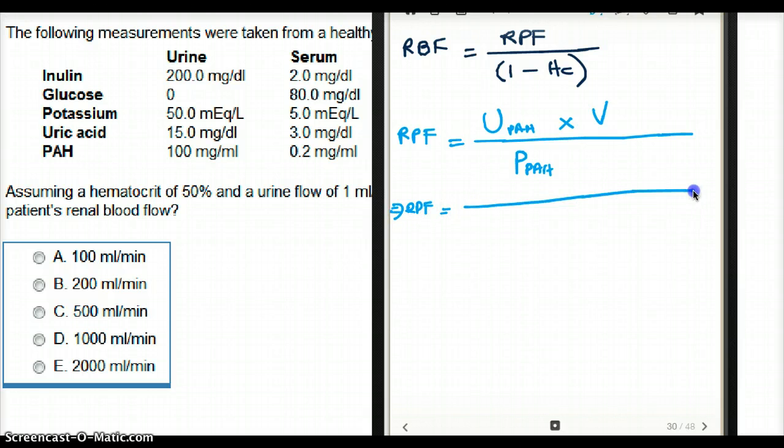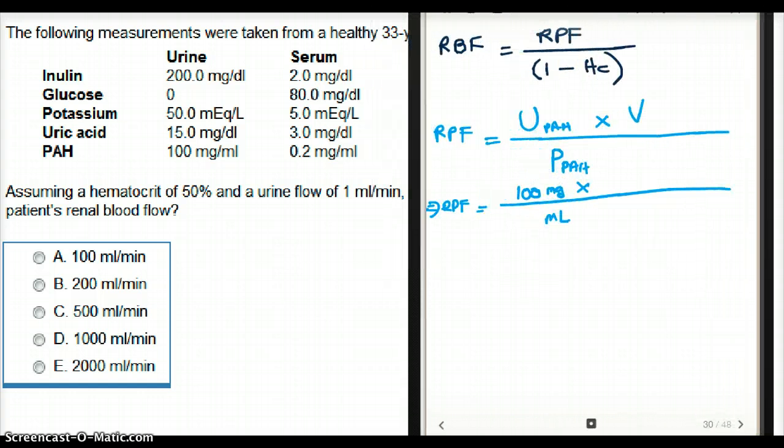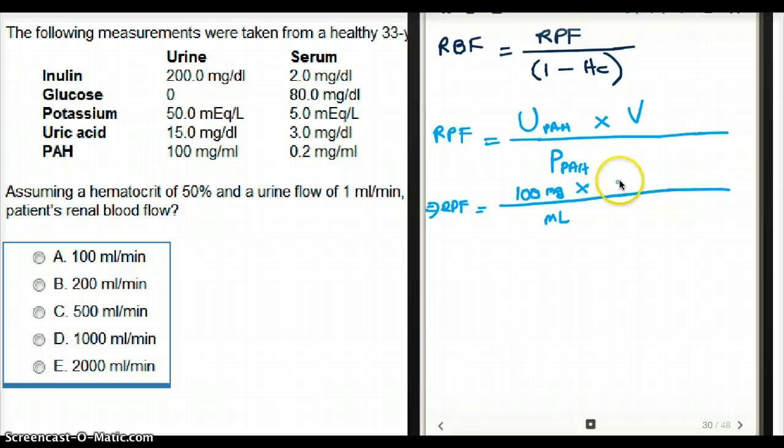Urine PAH is going to be 100 mg per milliliter. So 100 mg per milliliter times urine flow is 1 ml per minute, 1 ml per minute times 1 divided by PAH.